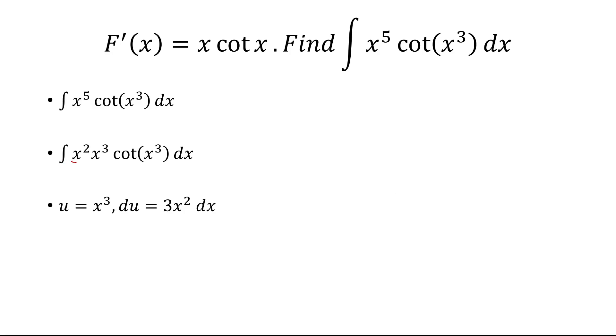So here I have x squared dx. That turns into du over 3. And then x cubed is u, and cotangent of x cubed is cotangent of u.